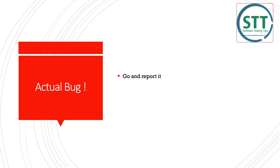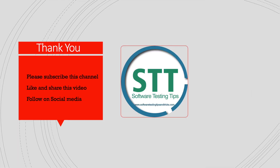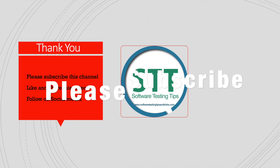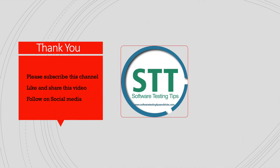Finally, sometimes a test case failing means there is an actual bug in the product. You should have confidence in your automation suite — if a test fails, investigate whether it's a real bug, report it, and skip that test until the bug is fixed. Thank you for listening. If you have any doubts, please comment, and don't forget to like, subscribe, and share this video.